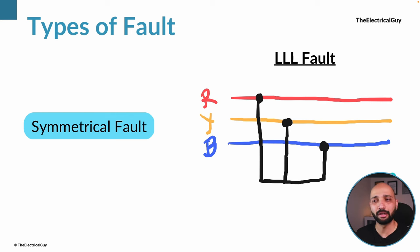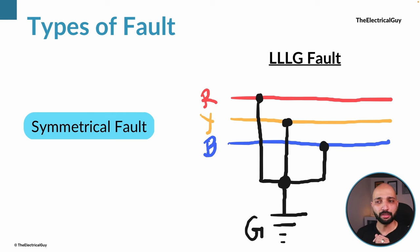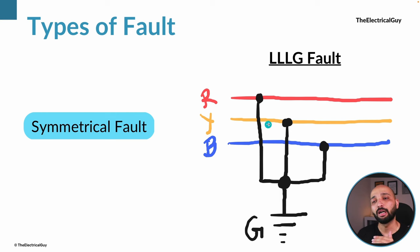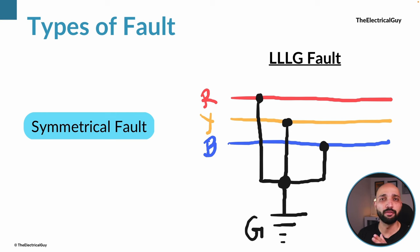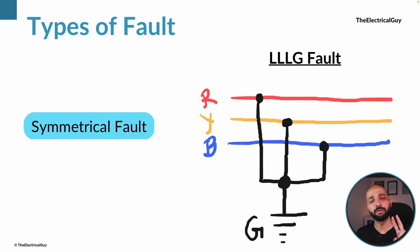The short circuit current in case of symmetrical faults is very high. The second symmetrical fault is the triple line to ground fault, where all three phases are connected and the ground is also connected. This is again a severe fault, but its occurrence is very rare compared to other faults.